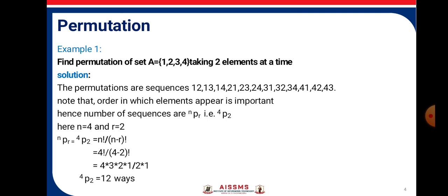Hence, number of sequences are nPr that is 4P2. Using the formula n! / (n-r)! gives us 4! / (4-2)! = 4! / 2! = 4×3×2×1 / 2×1 = 12 ways. Here in permutation, the order is important.